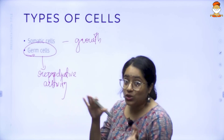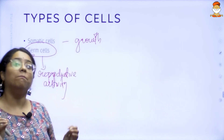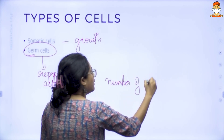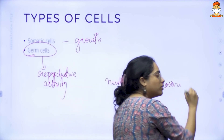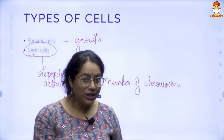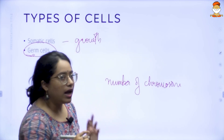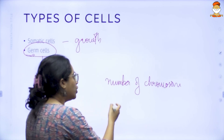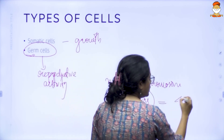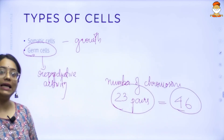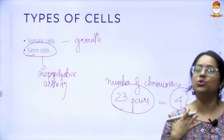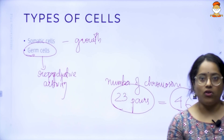Another important difference between somatic cells and germ cells has to do with the number of chromosomes. If you take a normal human body and look at a cell, you will find chromosomes inside the nucleus. Every somatic cell has 23 pairs of chromosomes — which means 46 chromosomes. These 23 pairs, which we inherited from our parents, determine who we are, and they are present in every somatic cell.